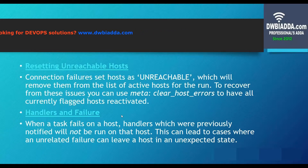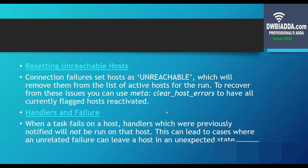The third type is handlers and failures. When a task fails on a host, handlers that were previously notified will not be run on that host, and it can lead to cases where we have an unrelated failure and unexpected state. In this case, we can configure our handlers to work even on the failed part of our playbook, or they can simply stop working so that we are not given an unrelated failure.